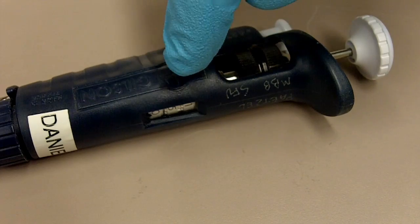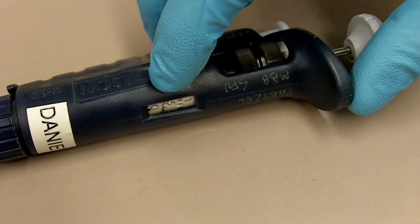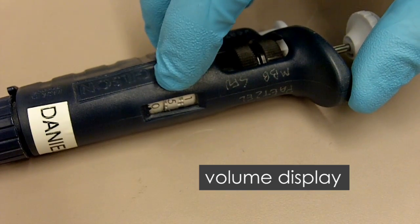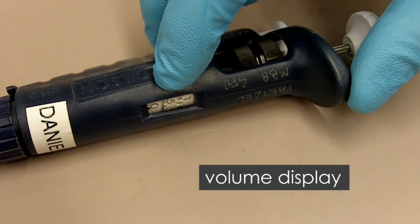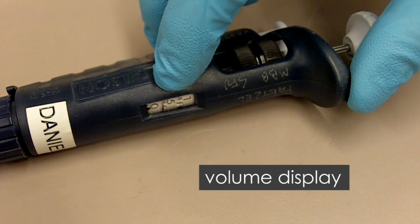So first of all, we'll look at here. Here is the volume display. It displays how much volume this pipette will withdraw at this time.